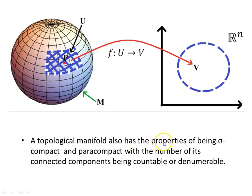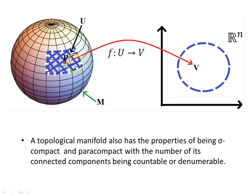A topological manifold also has the properties of being sigma compact and paracompact, with the number of its connected components being countable or denumerable. Whatever shape the surface — the sphere is quite simple, but you can imagine other manifolds with connected pieces. So long as they are connected, they satisfy the definition of a topological manifold.